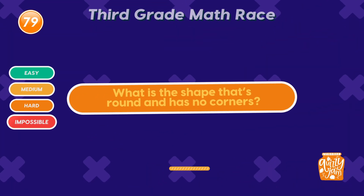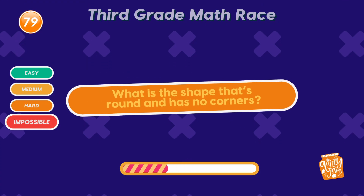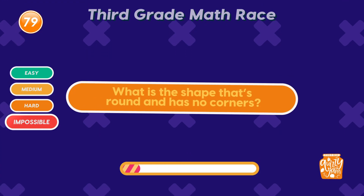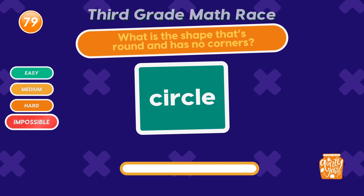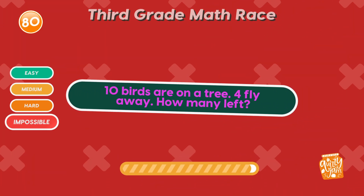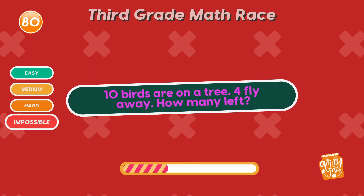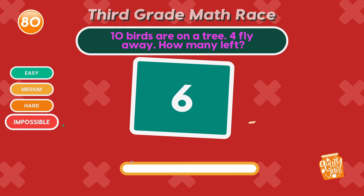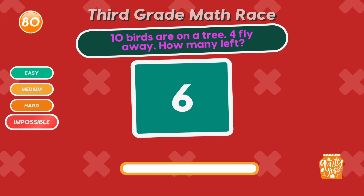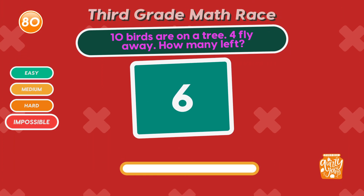What is the shape that's round and has no corners? Circle! Spin into success! Ten birds are on a tree, four fly away. How many left? 6! If you made it here, share your score and tag a friend who dares to try!